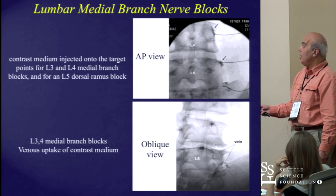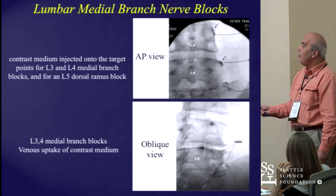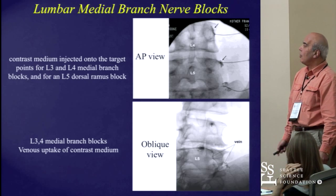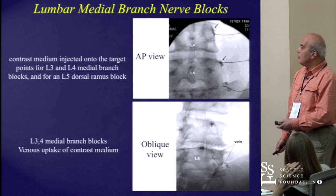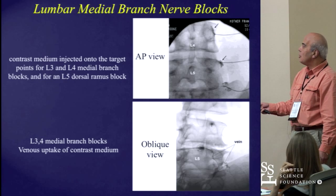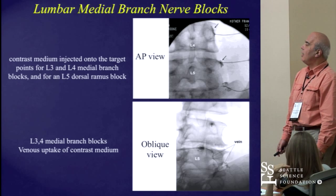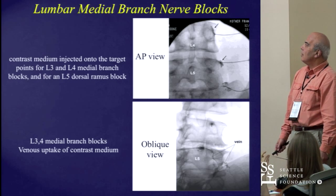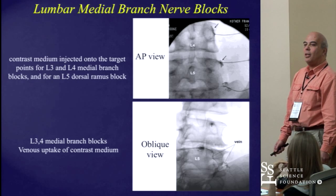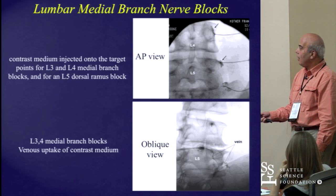This is as good as it can be, and here you can see how even a relatively simple procedure such as this one can give you some problems — you can see some venous uptake of the contrast medium. That's one of the reasons why I think it is always good and always appropriate, any time you place a needle into the lumbar, cervical, or thoracic spine, to follow the final needle placement with an injection of contrast to make sure you are exactly where you need to be and that nothing like this happens.